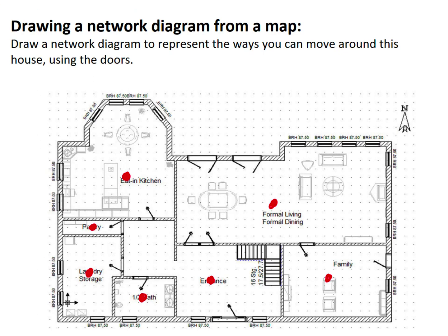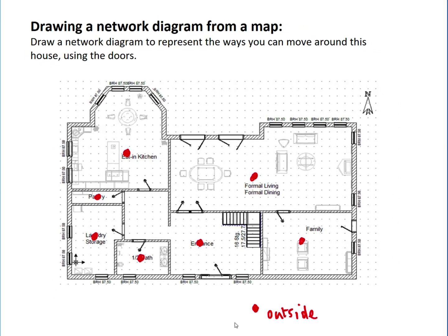So here are all the vertices, one for each of those, and as we just mentioned we need one for outside as well. So let's put one there for outside, and then we look at where the doorways are and which vertices connect to other vertices.